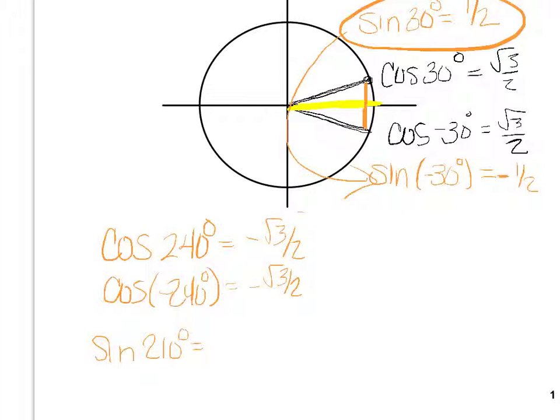cosine of 240, I was thinking about the wrong angle as I was saying 240. Cosine would be negative 1 half, so cosine of negative 240 would be negative 1 half still.